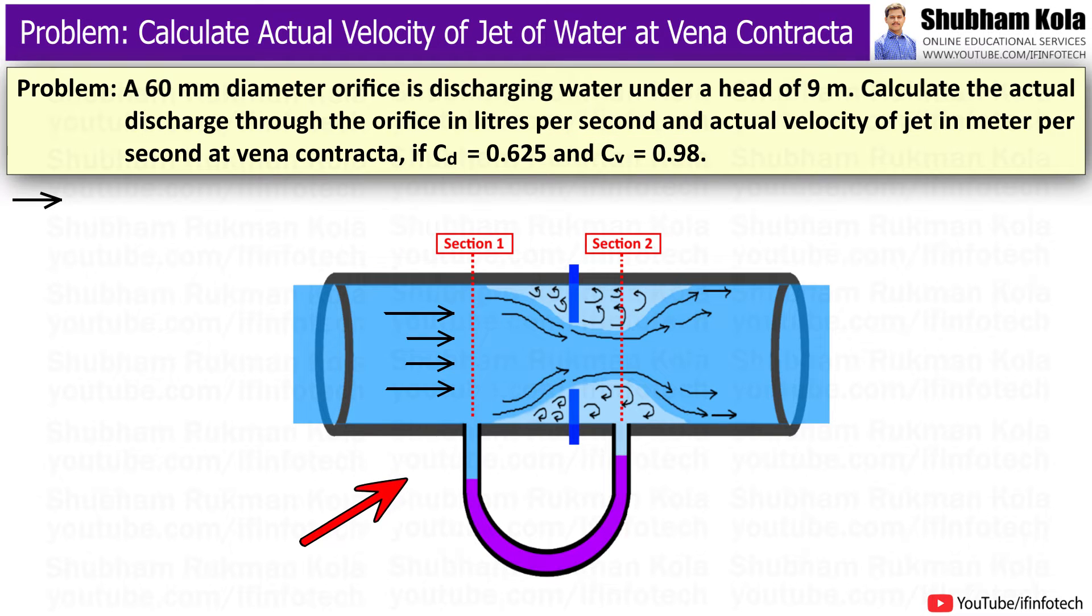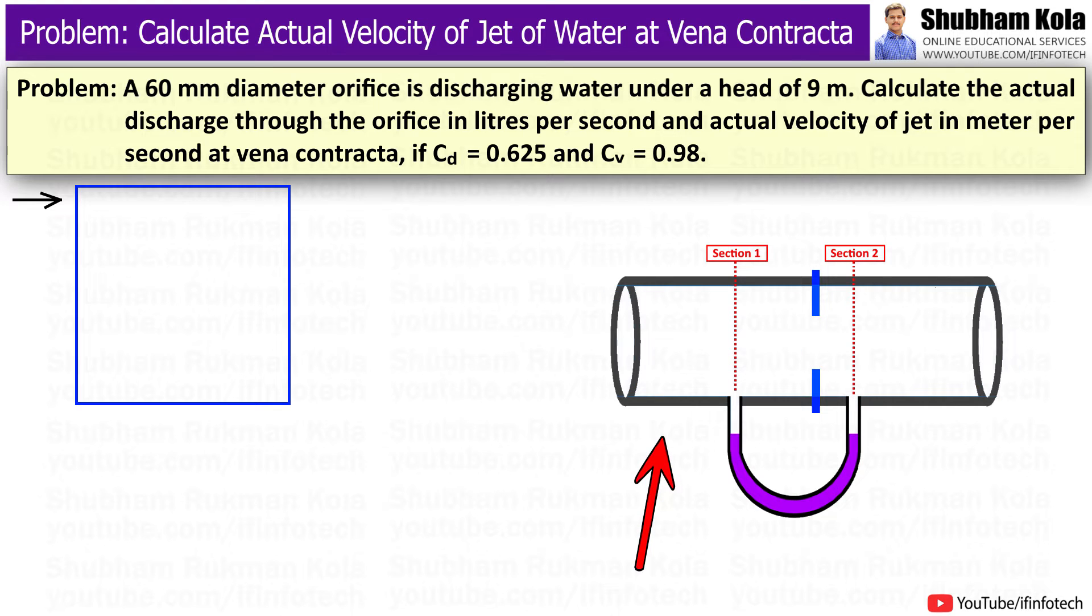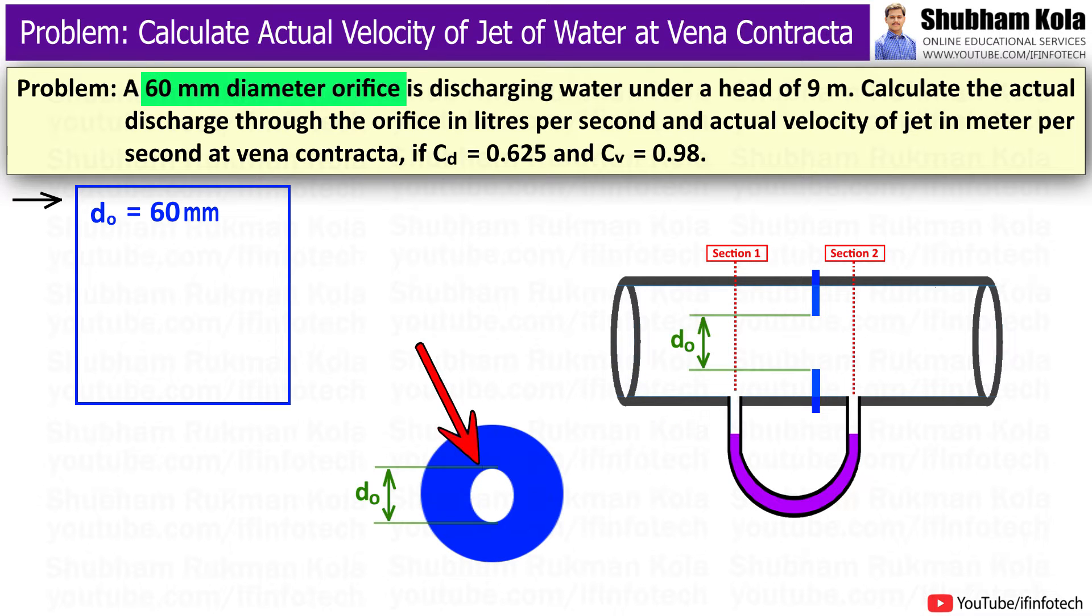To solve this problem, first I will draw the diagram of the orifice meter and note down the given data. Let us consider this is the pipe in which the orifice plate is placed, and the diameter value of orifice is given as 60mm,